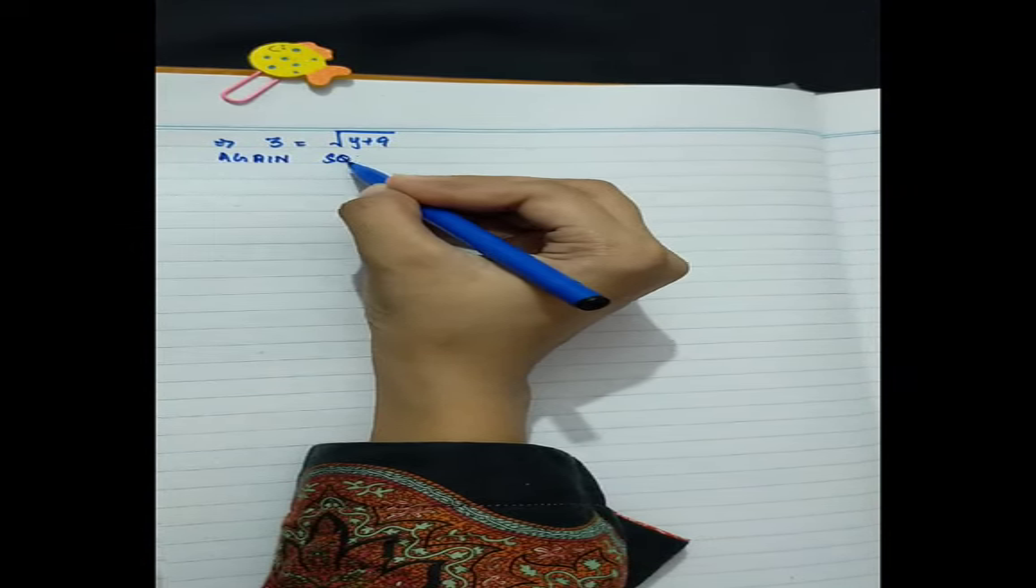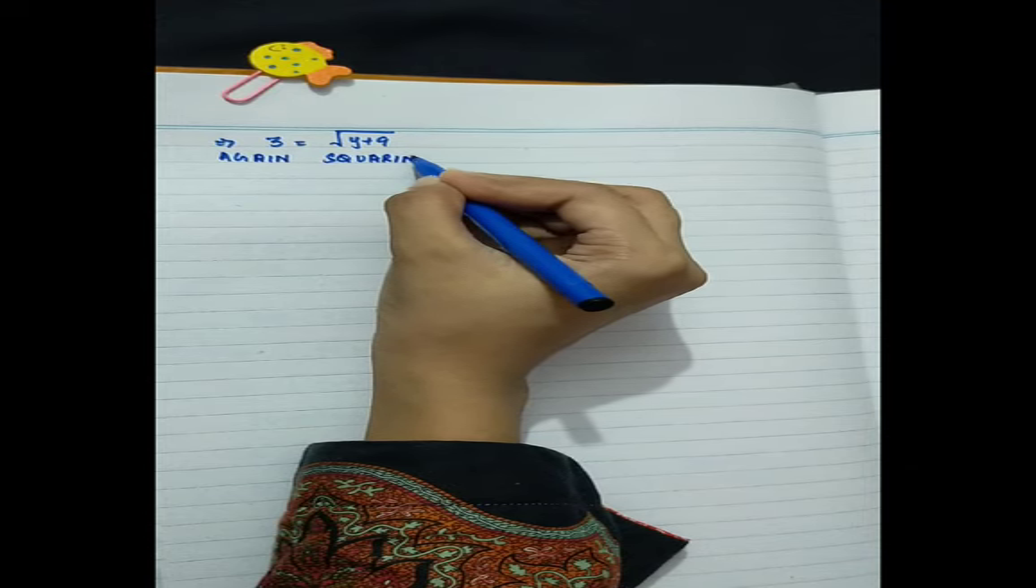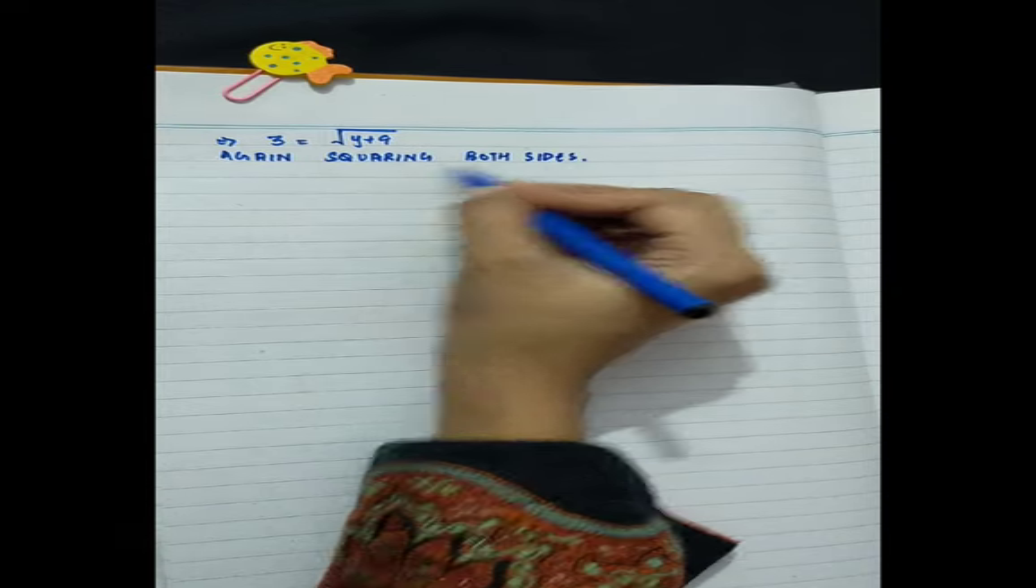Minus and minus cancel. 10 divides, giving 3 = √(y+9). Again squaring both sides. 3² = (√(y+9))². 9 = y+9 and y value is 0.